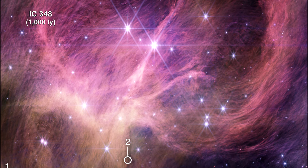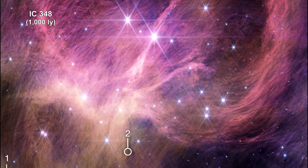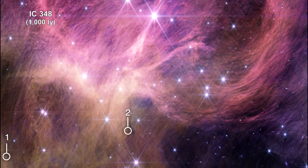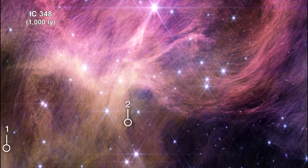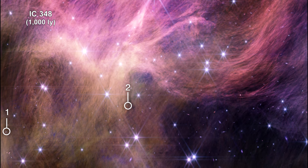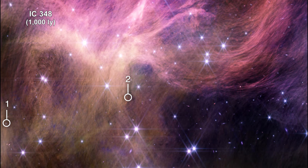Brown dwarfs are objects that straddle the dividing line between stars and planets. They form like stars, growing dense enough to collapse under their own gravity. But they never become dense and hot enough to begin fusing hydrogen and turn into a star.